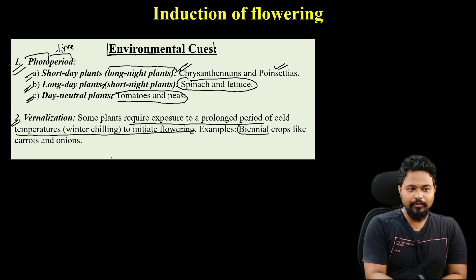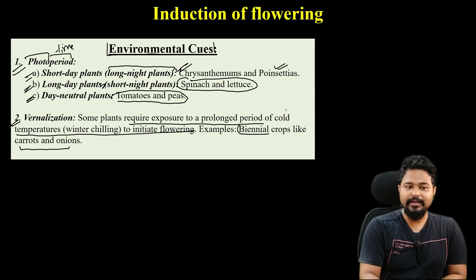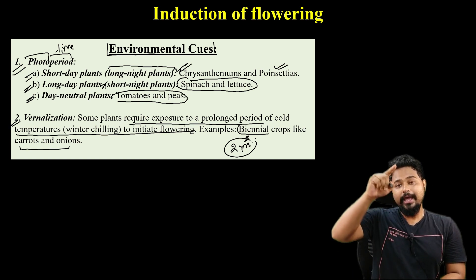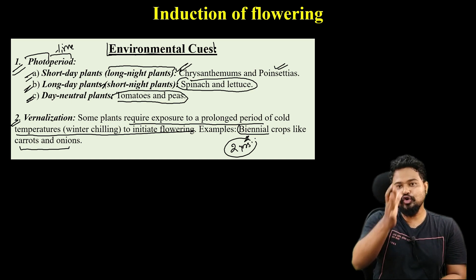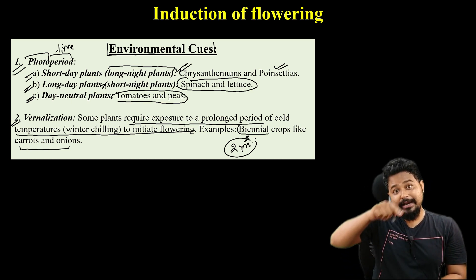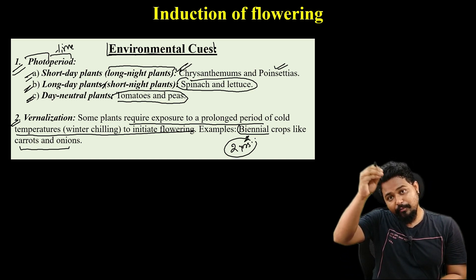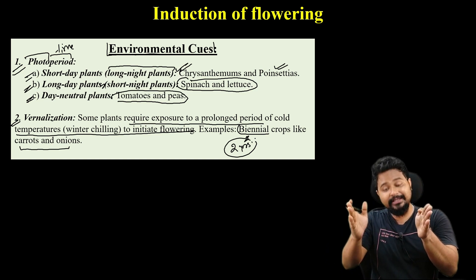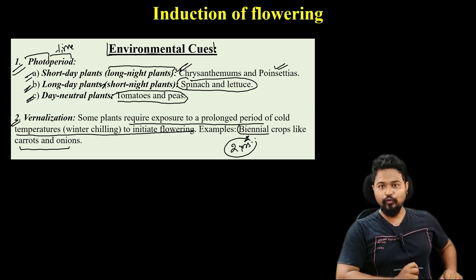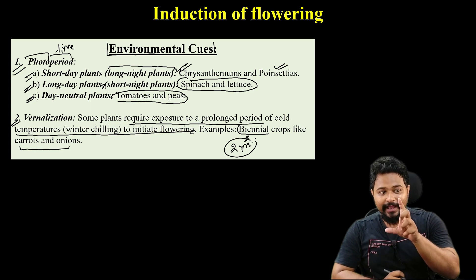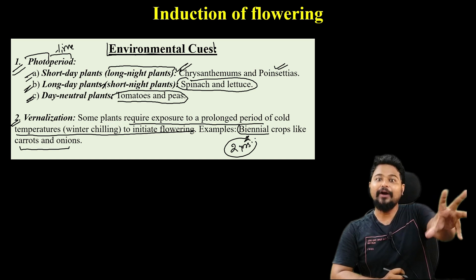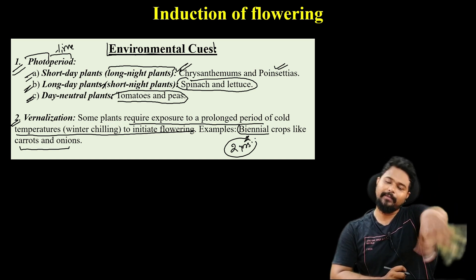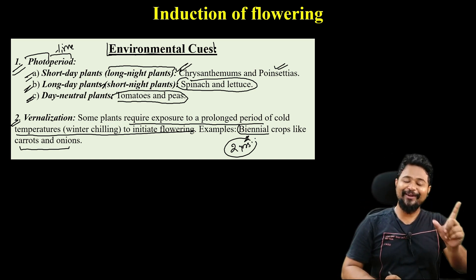For example, biennial crops like carrots and onions have a two-year life cycle: in the first year they grow vegetatively, and in the second year they flower. But farmers can manipulate this — they can treat biennial crops like annuals by giving them artificial cold treatment, inducing them to flower sooner. So carrots and onions are examples of vernalization.